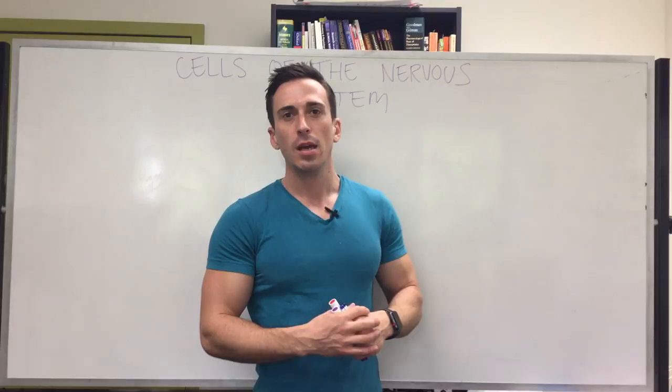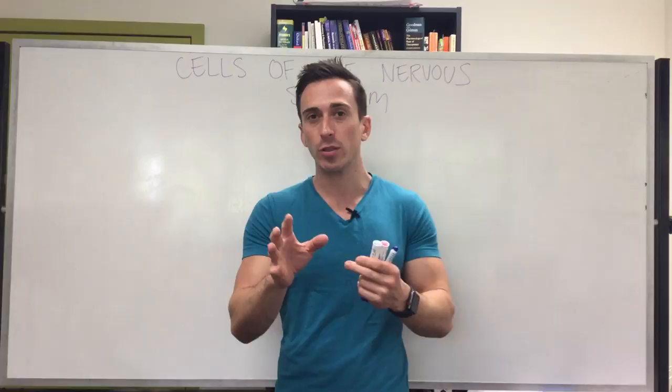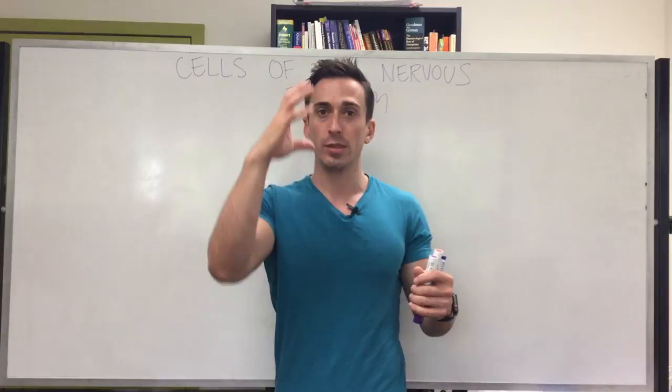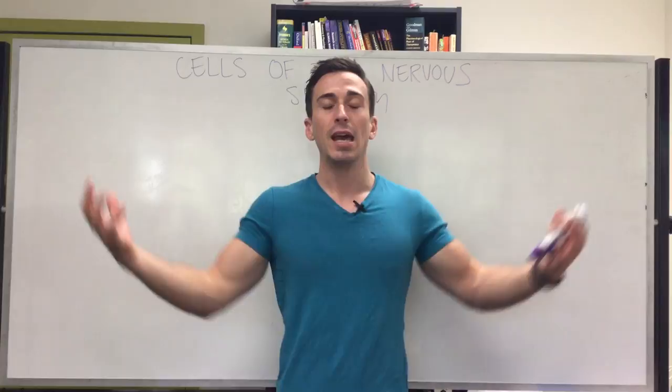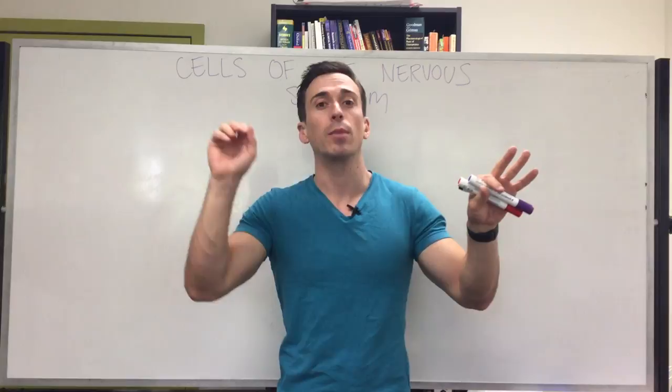The nervous system has a number of different cell types that can be broken up into two categories: first is neurons, second is glia. We're going to look at the different types of neurons and glia within the nervous system. First, we need to divide the nervous system into the central and peripheral. The central nervous system is the brain, brain stem, and spinal cord, and the peripheral nervous system is all the nerves that come out and back in to the brain, brain stem, and spinal cord.